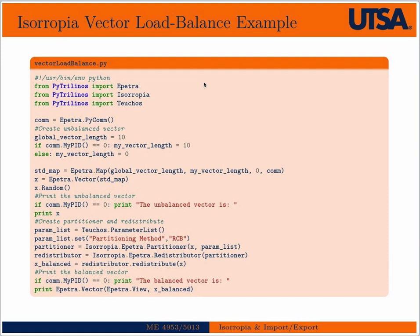Here's an example of load balancing a Petra vector. You'll notice a few new import statements at the beginning — namely Isoropia itself and Teuchos, because we need it for a parameter list. This part of the code should look pretty familiar: basically, I'm creating an unbalanced vector of length 10, initially all on the rank 0 processor. I construct a map and a Petra vector, then put some random numbers in it.